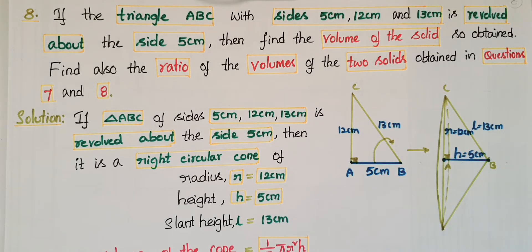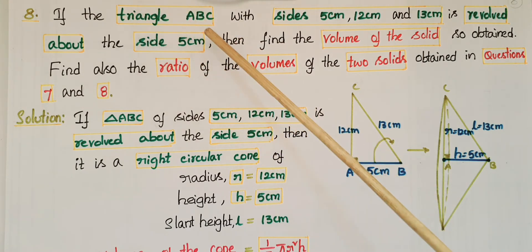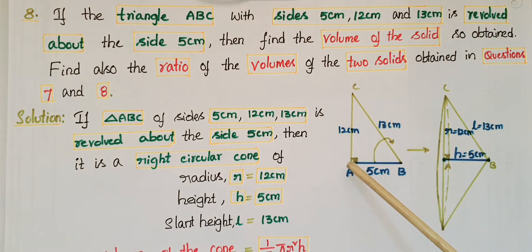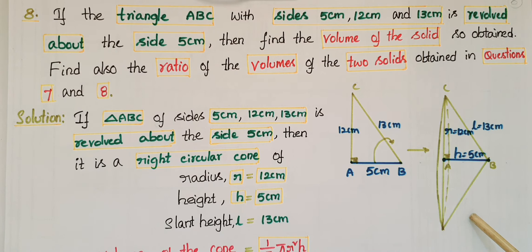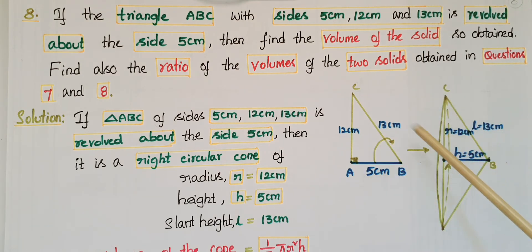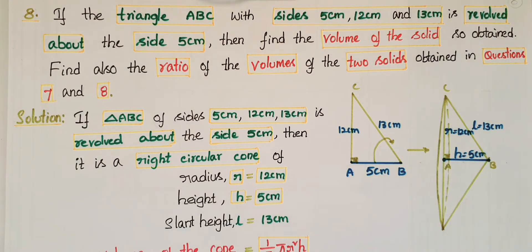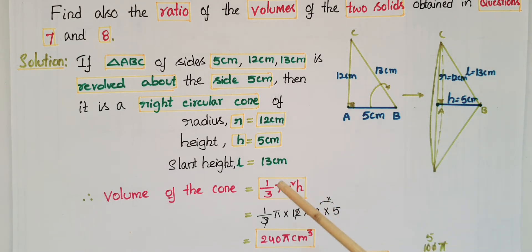This is the eighth problem, same as the previous question 7, but here triangle ABC is revolved about the side AB, which is 5 centimeters. The same right triangle with the same dimensions is revolved about the 5 centimeter side, forming a right circular cone. Here the height h equals 5 centimeters, the base radius r equals 12 centimeters, and the slant height l equals 13 centimeters.